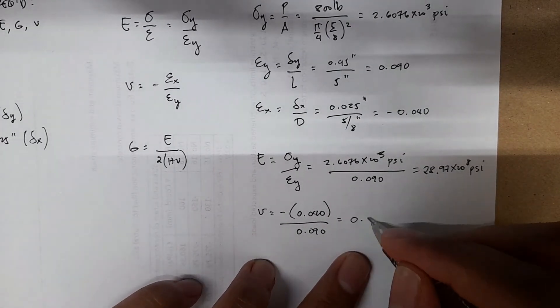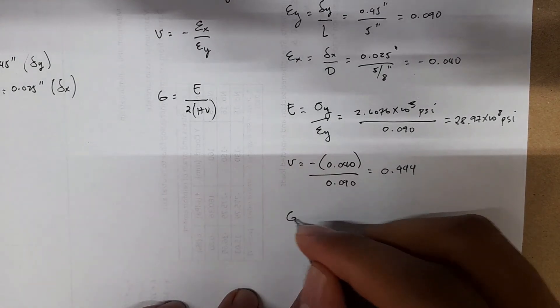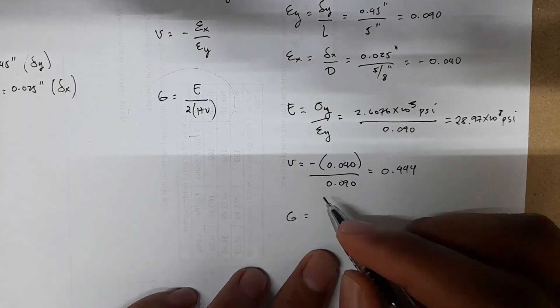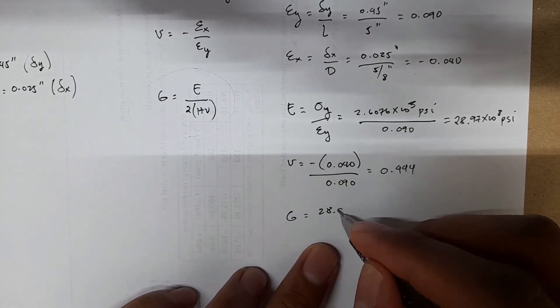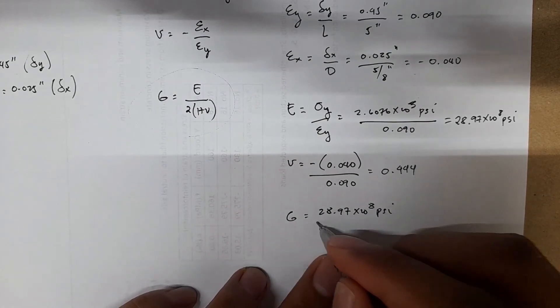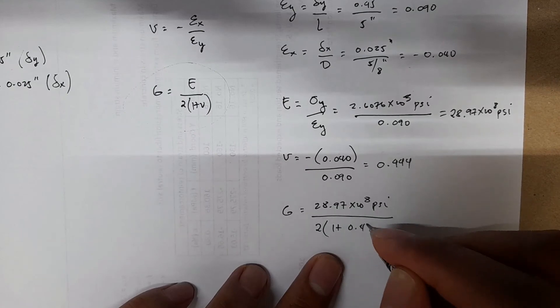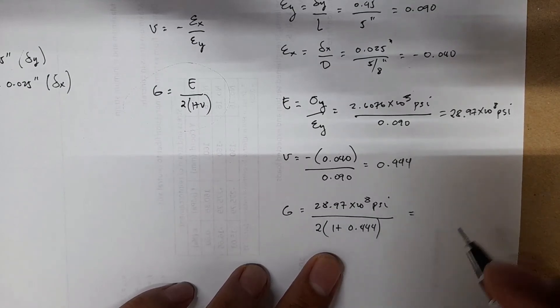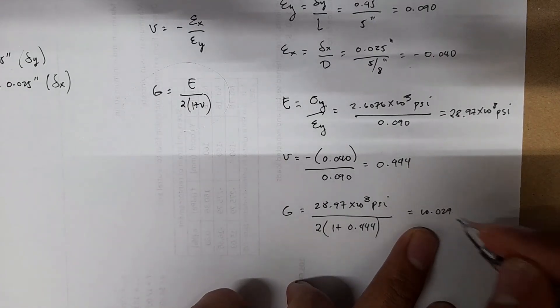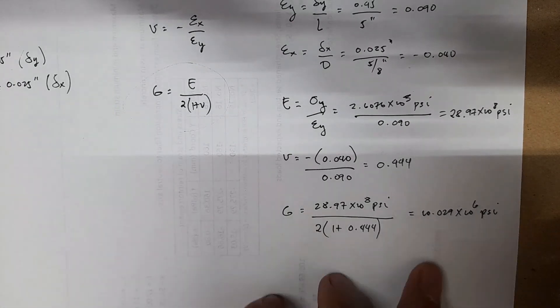Then you have G, which is basically using this relationship. If E is 28.97 times 10 to the 3 psi divided by 2 times (1 plus 0.444), your G is 10.0902 times 10 to the 3 psi.